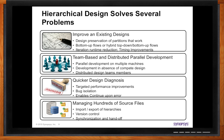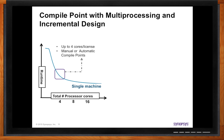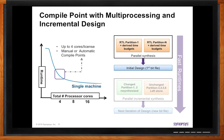One of the problems with really big designs — and team designs in particular — has always been having to run the entire completed design all at once. There are two things coupled together in the solution: compile points and multiprocessing capabilities. With a single license within Simplify, you can run up to four processors on a single design. You can partition the design using compile points to create individual modules. This lets you go through your initial compile very quickly using multiprocessing, and when you go back for iterative runs, you only need to recompile the one or two partitions that have changed.